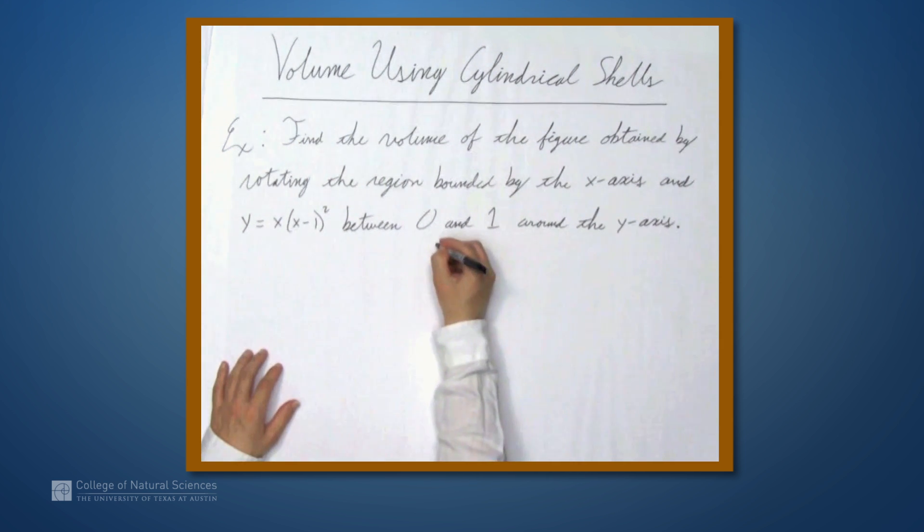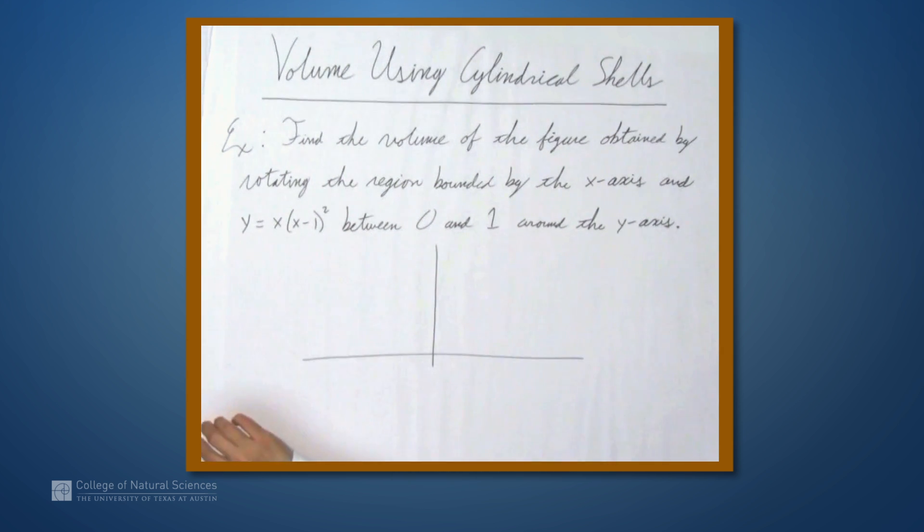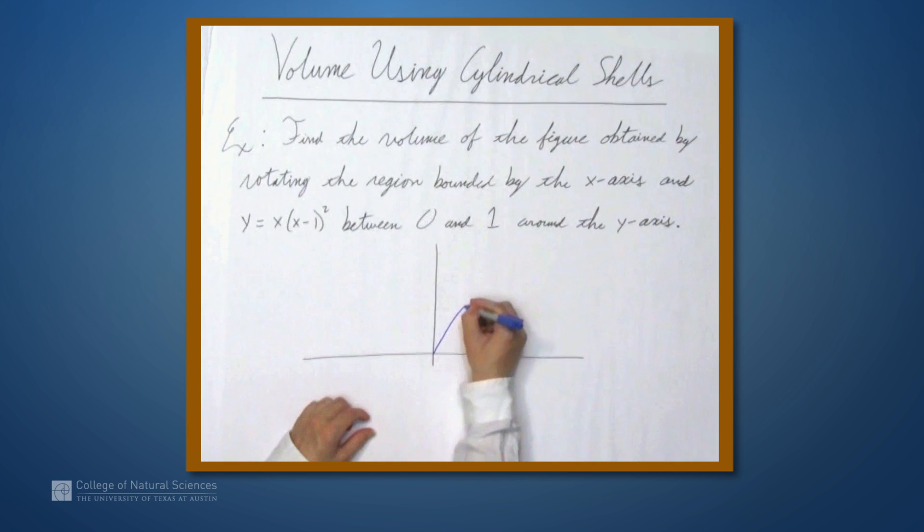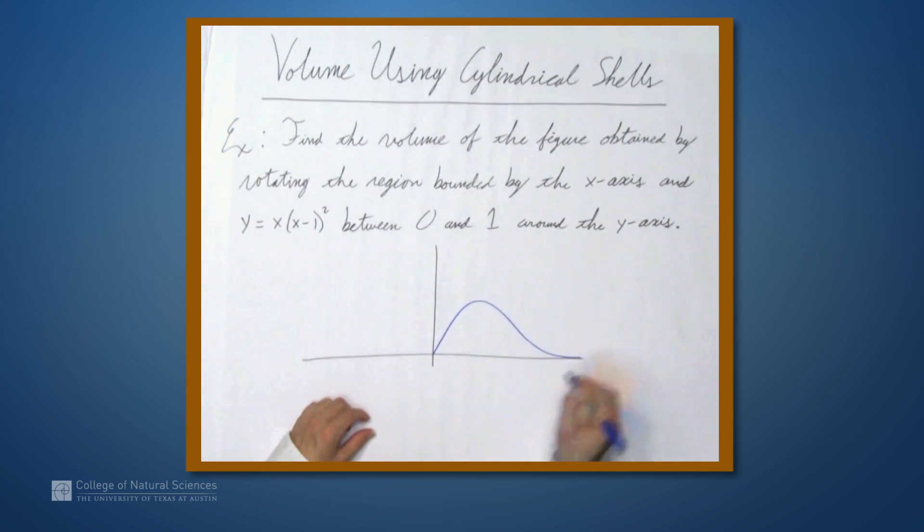Let's graph the region we're talking about. The graph of y equals x times (x-1) squared looks something like this. We won't talk in detail in this video about why this is, but here's a sketch of this graph. It stops here at 1 as far as we're concerned.